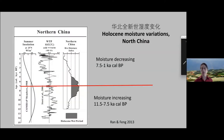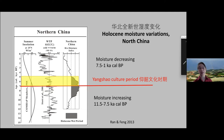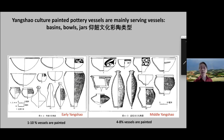We need to understand the circumstances driving Yangshao expansion, specifically climatic conditions. From the early Neolithic about 9,000 years ago to 7,000 years ago, moisture conditions increased, peaking around 7,000 years ago at the beginning of Yangshao culture. Then the climate declined and fluctuated — becoming drier — affecting agriculture. These conditions of population pressure and unstable environment drove people to spread out. Only about less than 10% of pottery was painted during early and middle Yangshao, mainly serving and drinking vessels.